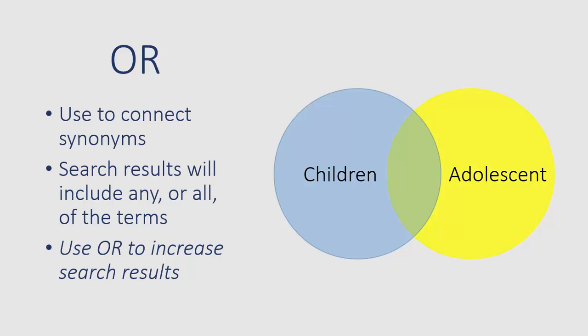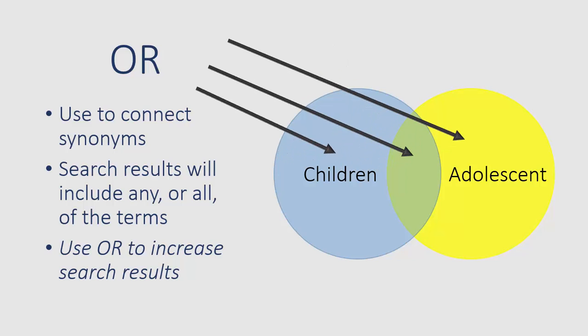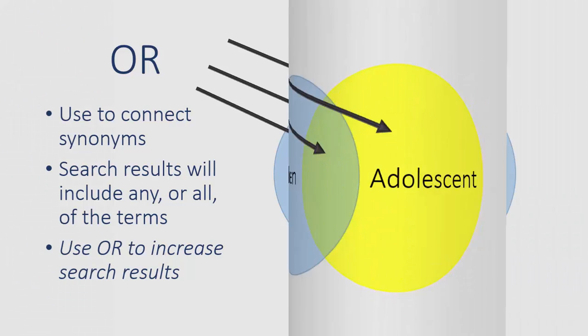The OR operator can be used to combine synonyms. For example, you are searching for articles related to children — you may also want to include the synonym ADOLESCENT. By combining these two terms, children and ADOLESCENT, with OR, results will include either children OR ADOLESCENT or both terms. Unlike AND, using OR will increase the number of results.